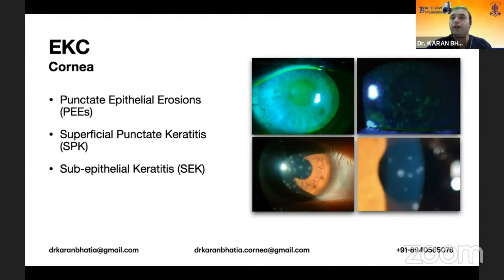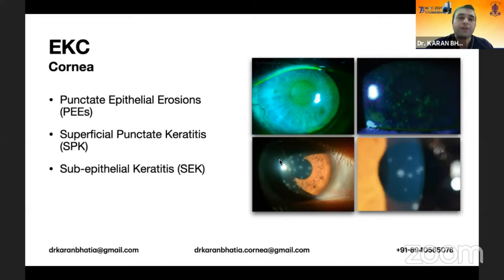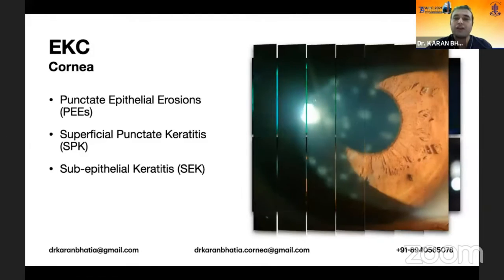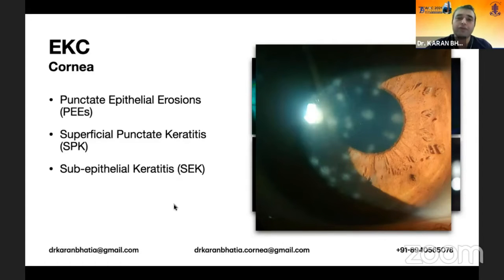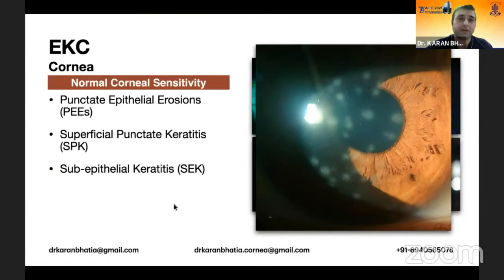The cornea shows four phases: it starts with punctate epithelial erosion, which progresses to superficial punctate keratitis, then subepithelial keratitis, and finally permanent scars that don't resolve. The most important phase to monitor is the subepithelial keratitis phase, because if it doesn't resolve, it forms scars that can cause photophobia and visual problems, particularly if centrally located.